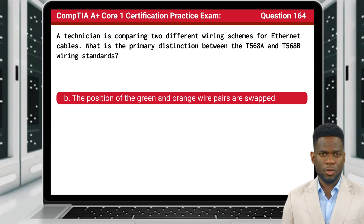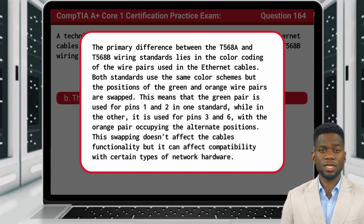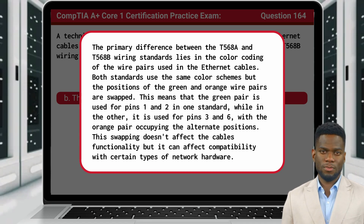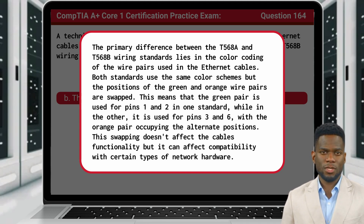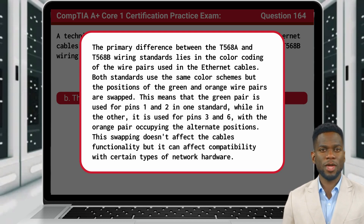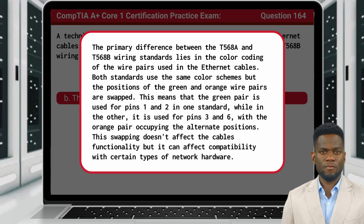The answer is B: the position of the green and orange wire pairs are swapped. The primary difference between the T568A and T568B wiring standards lies in the color coding of the wire pairs used in Ethernet cables. Both standards use the same color schemes, but the positions of the green and orange wire pairs are swapped. This means that the green pair is used for pins 1 and 2 in one standard, while in the other it is used for pins 3 and 6, with the orange pair occupying the alternate positions. This swapping doesn't affect the cable's functionality, but it can affect compatibility with certain types of network hardware.